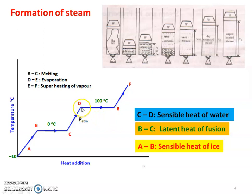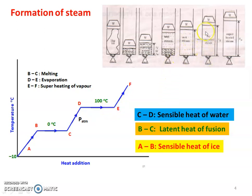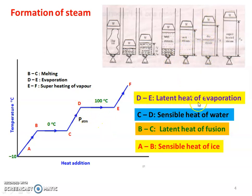At point D, water at 100 degrees Celsius is heated and converted into steam. D is saturated water and water is converted into steam. From D to E, it is completely steam — that is called dry saturated steam. The heat added from D to E is called the latent heat of evaporation. Converting liquid into vapor is called evaporation.